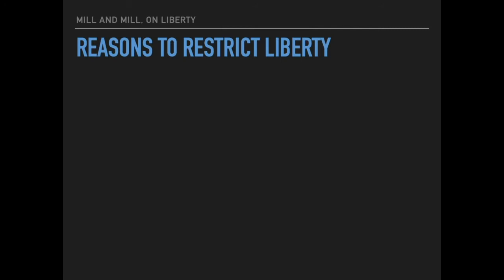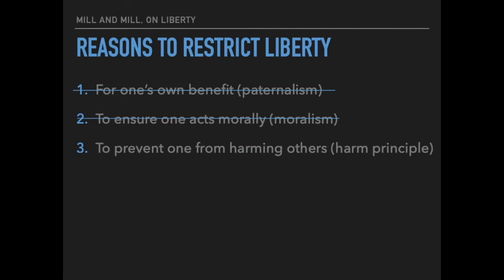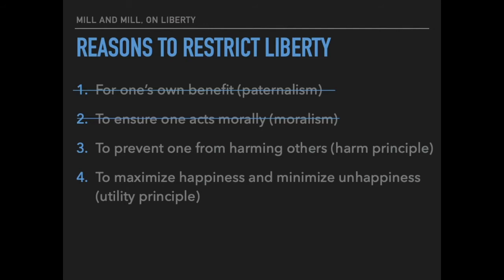In the book, they consider several reasons that one might seek to restrict liberty — why a government might seek to restrict the liberty of its citizens. The first is that you might seek to restrict the liberty of others for their own benefit — this is a paternalistic reason — and the Mills reject this, saying it is never an appropriate cause to restrict liberty. They also consider the possibility of restricting liberty to ensure that people act morally, known as moralism, and they reject that idea too. Third, a government might restrict one's liberty to prevent one from harming others — this is the harm principle. And fourth, one might seek to restrict liberty for utilitarian reasons, to maximize happiness and minimize unhappiness — this is the utility principle.